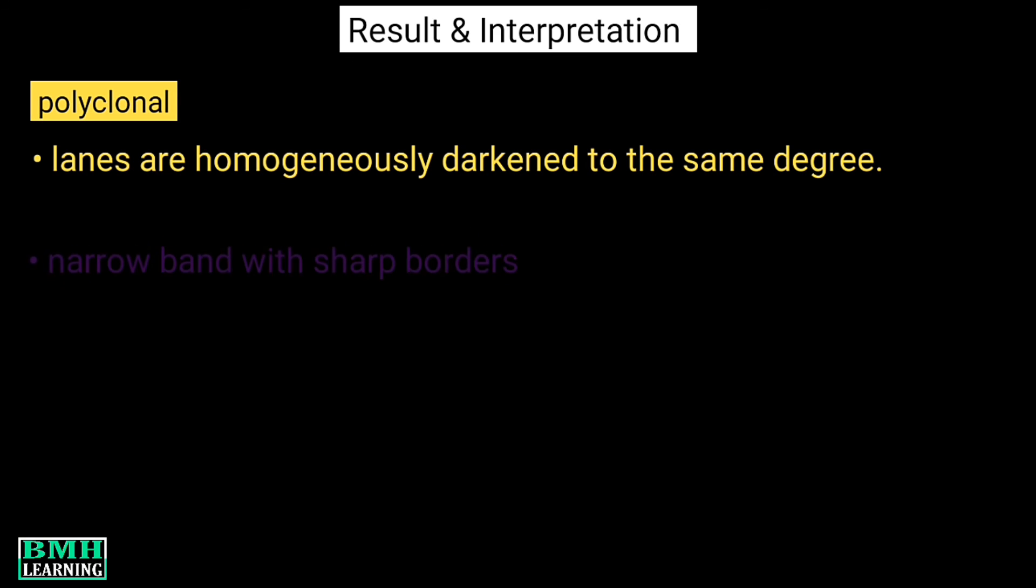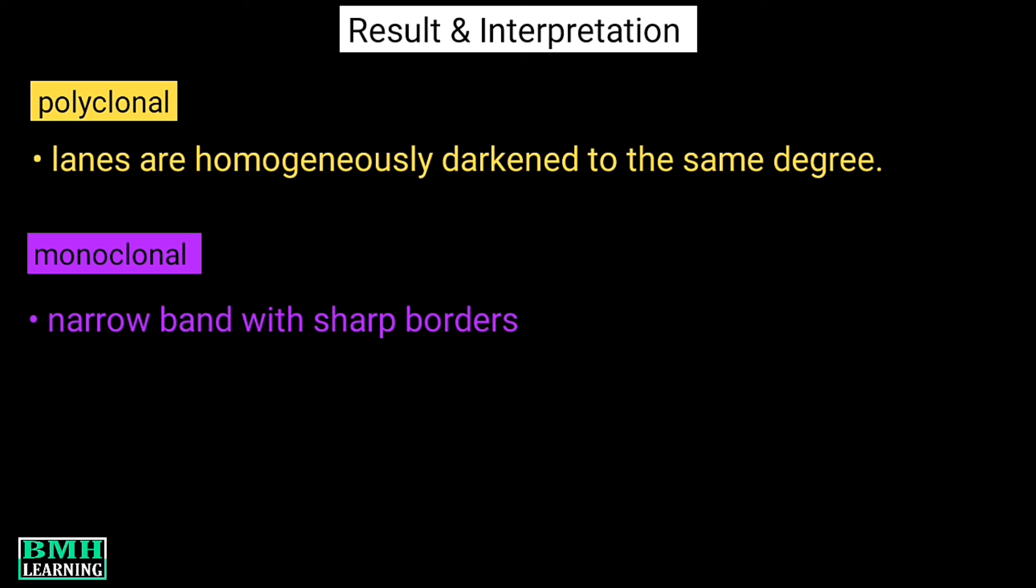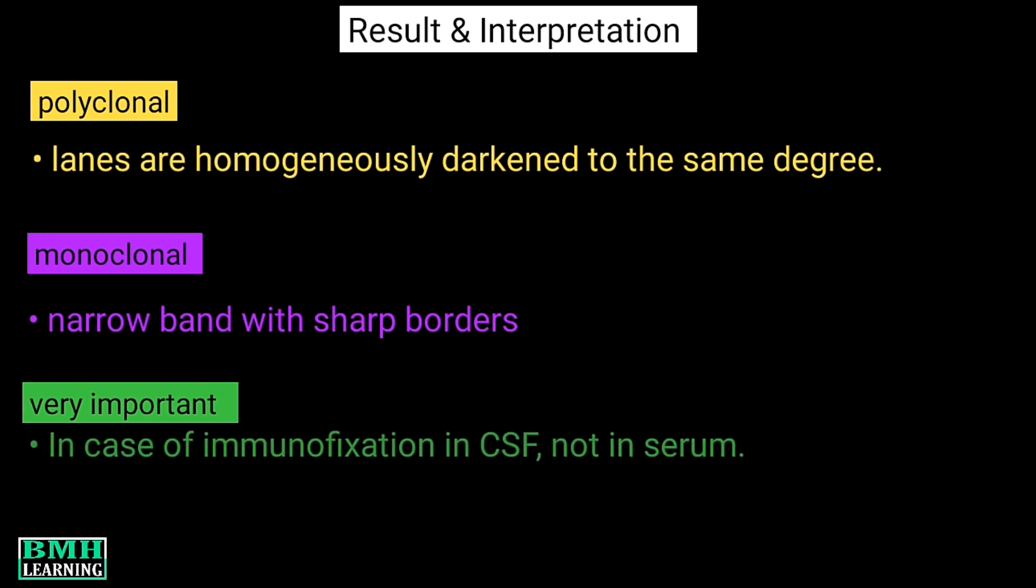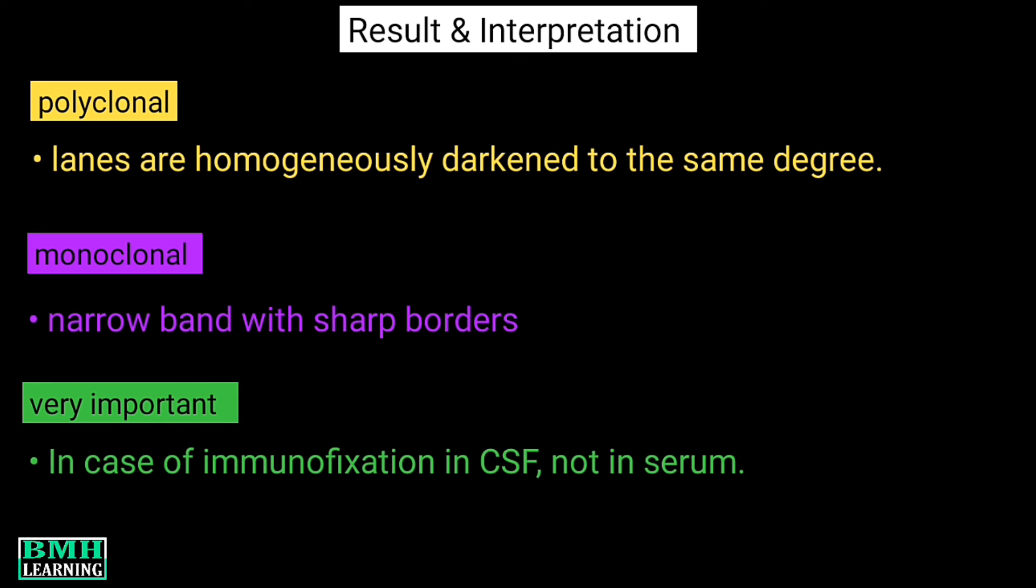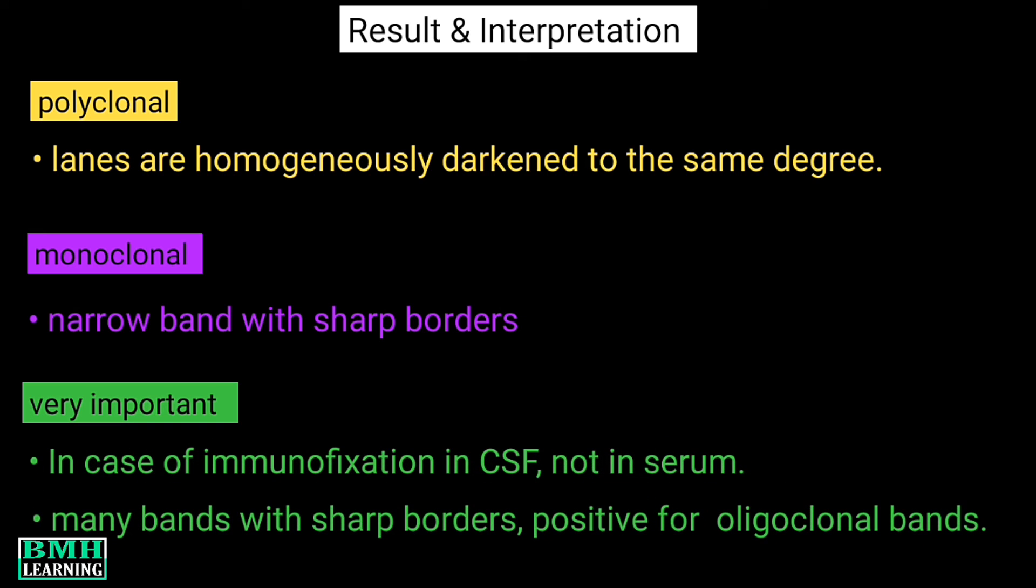If a narrow band is identified that has sharp borders, it means we are dealing with monoclonal protein. This is important: it's in case of immunofixation in cerebrospinal fluid, not in serum.